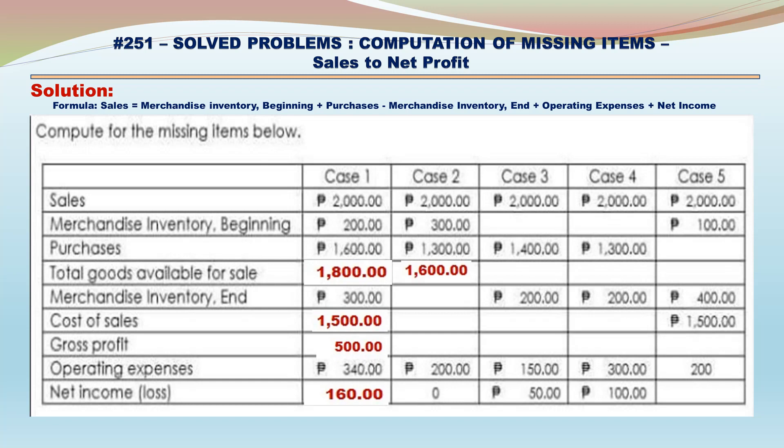Case 2: Merchandise Inventory Beginning 300 plus Purchases 1,300 gives Total Goods Available for Sale of 1,600. Gross Profit equals 200 — that is Operating Expenses plus Net Income; since there is no net income, Operating Expenses equals the Gross Profit of 200. Cost of Sales equals 1,800 — that is 2,000 minus 200 gross profit.